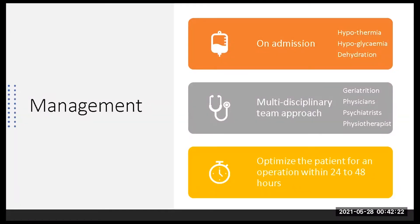So how are we going to manage these patients? On admission, the patients could have hypothermia, hypoglycemia, or dehydration that needs to be corrected. To optimize these patients and operate within 24 to 48 hours, you need a multidisciplinary team approach: geriatricians, physicians, psychiatrists, physiotherapists, and occupational therapists.